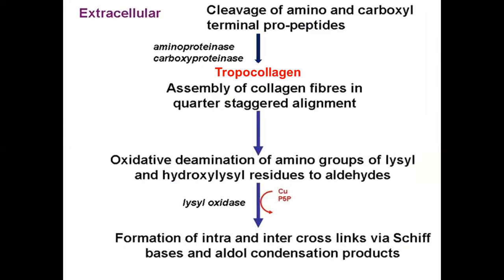Extracellular processing includes the proteolytic removal of end-propeptides from pro-collagen molecules by aminoproteinase and carboxyproteinase, and the molecules become tropocollagen. Collagen fibers are then stabilized by the formation of covalent cross-links. Oxidative deamination of amino groups of hydroxylysine and lysine forms reactive aldehyde groups that link molecules together, and this structure is responsible for tensile strength.